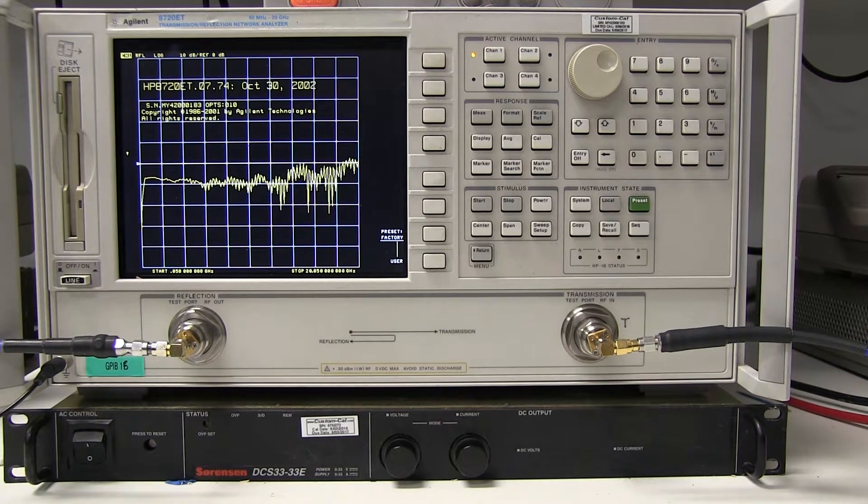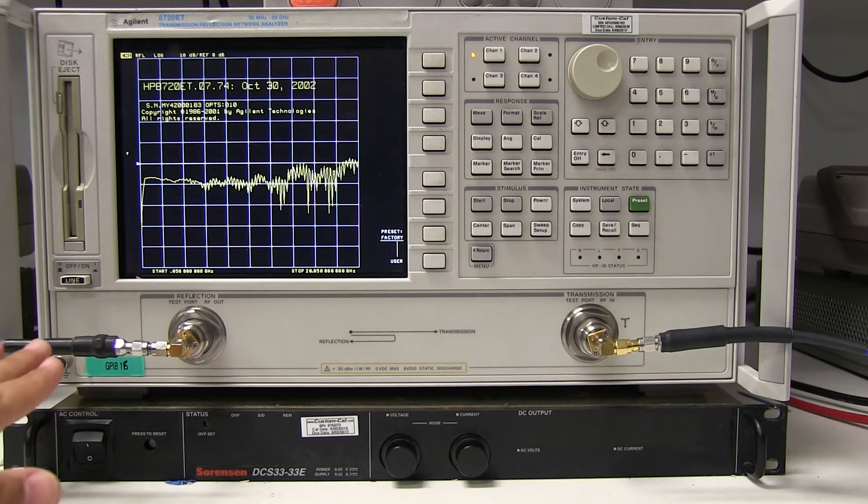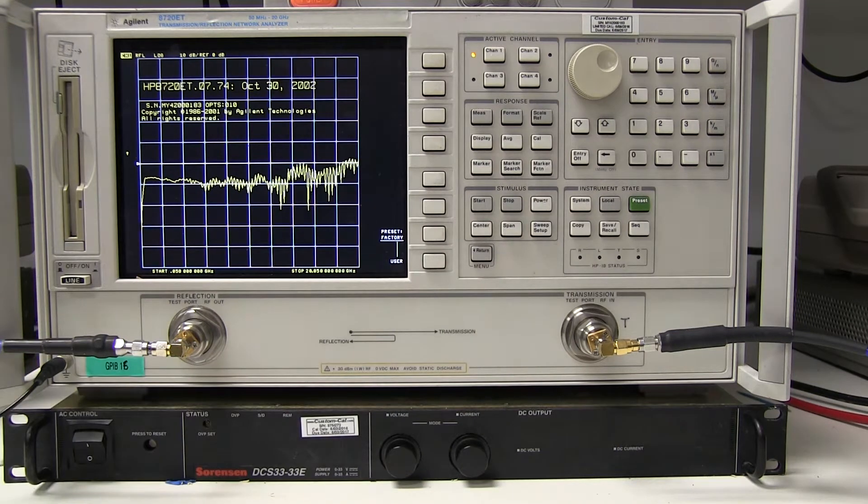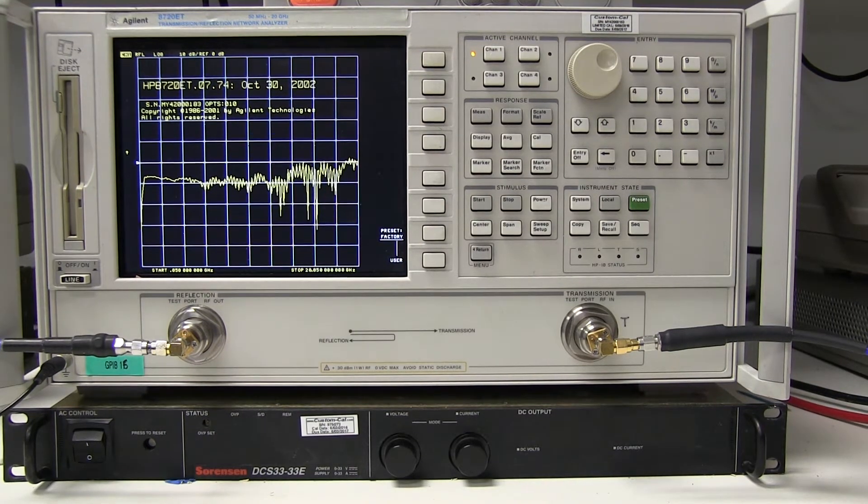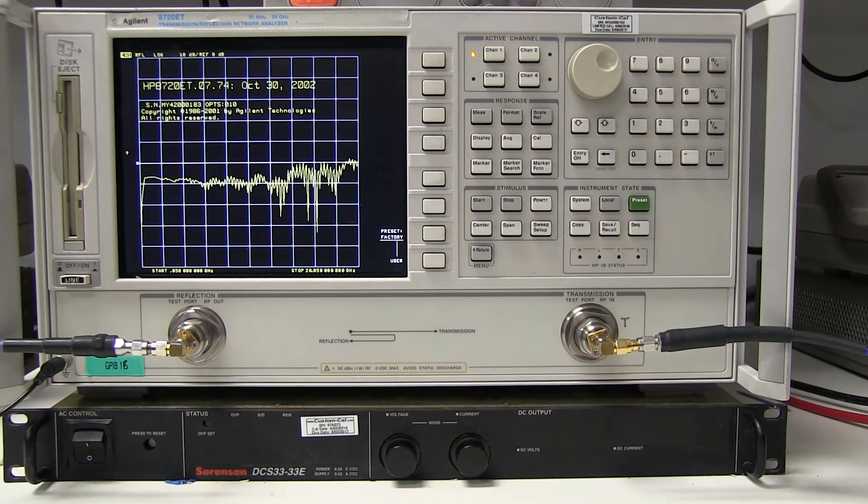Other differently configured network analyzers, which we'll show in other videos, have the ability to measure both S11, S22, S12, and S21, all in sequence, which is pretty neat. So the other equipment we're going to need to perform this calibration, which is called Open Short Load Through, or OSLT for short,